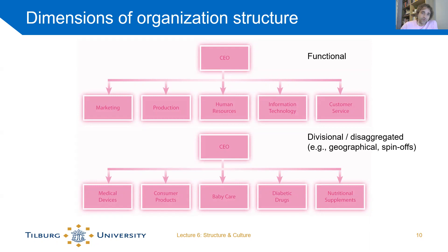Philips, for example, has Philips Medical and Philips Consumer. You can also divide by geographic region — a European, Asian, and American division. Or even more fine-grained, like a Tilburg and Amsterdam division. The key point is that departmentalization is not based on the function of people but on geography or type of products or services.